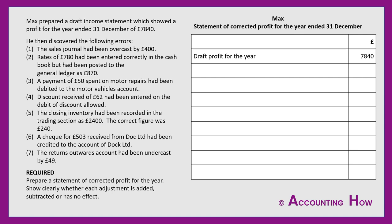Max prepared a draft income statement which showed a profit for the year ended 31st December of £7,840. He then discovered the following errors: sales journal overcast; rates entered in the ledger with a different figure; a payment of £50 spent on motor repairs has gone into motor vehicles; discount received had been entered on discount allowed; closing inventory has the wrong figure; a cheque received from DOC Limited has been credited to the account of DOC Limited; and returns outwards has been undercast. The question asks us to prepare a statement of corrected profit, showing clearly whether each adjustment is added, subtracted, or has no effect.